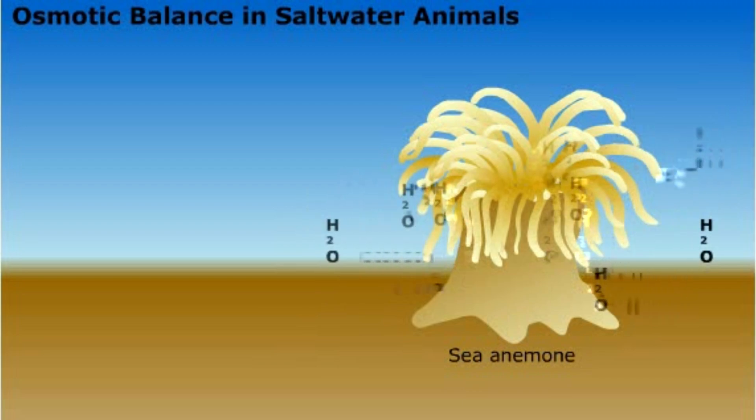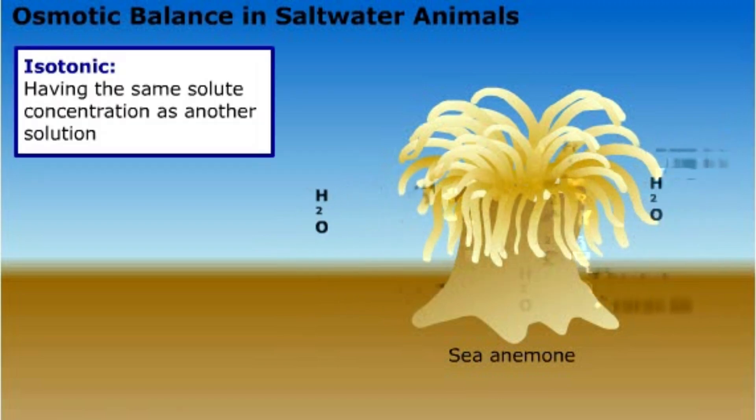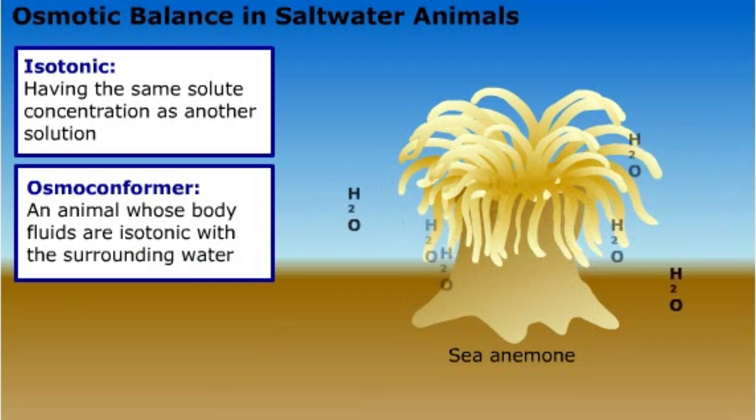For soft-bodied marine animals like the sea anemone, water balance is simple. Their body fluids are in equilibrium or are isotonic with the surrounding water. Osmotic pressures are the same inside and outside the animal's cells. Animals that don't actively adjust their internal water balance are called osmoconformers.